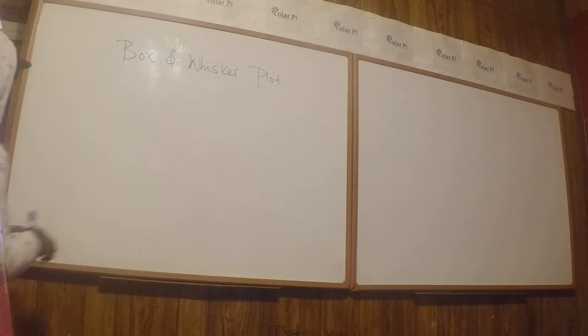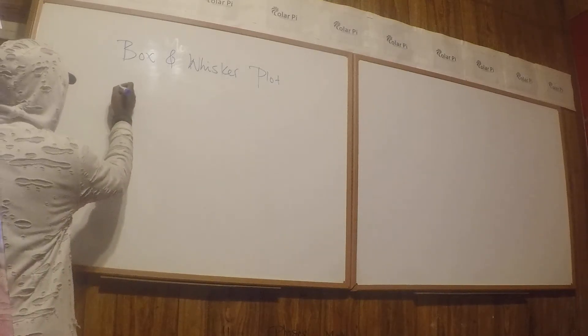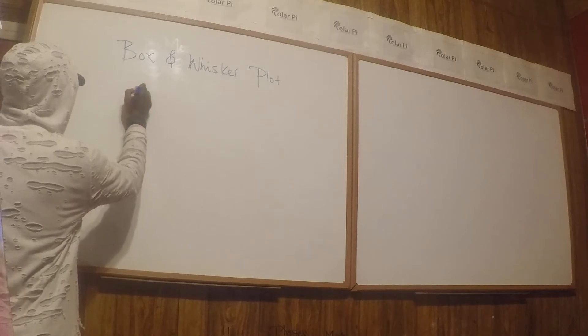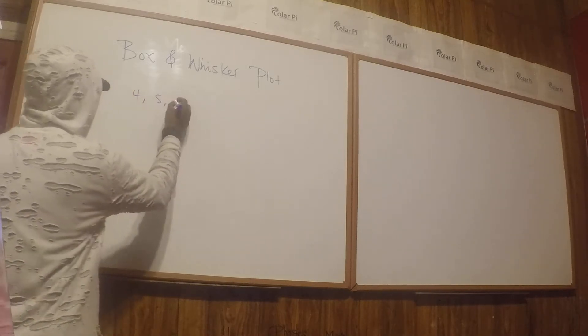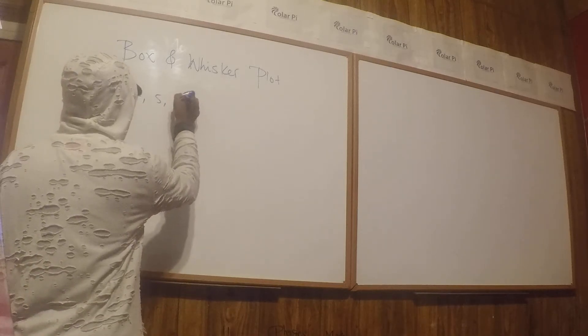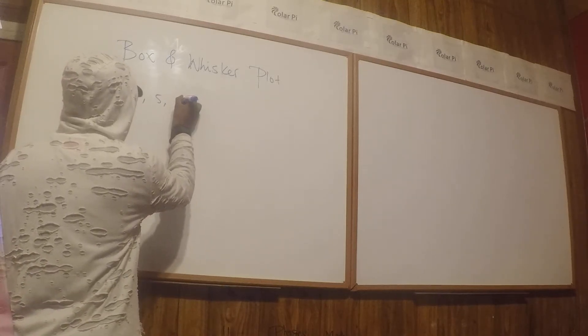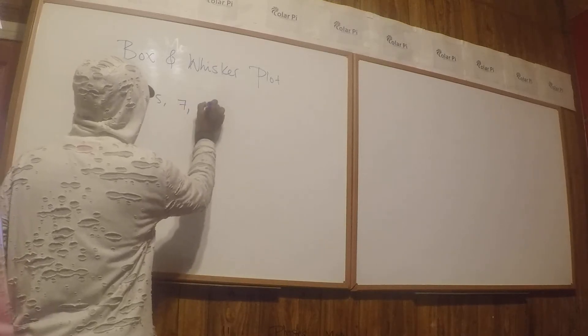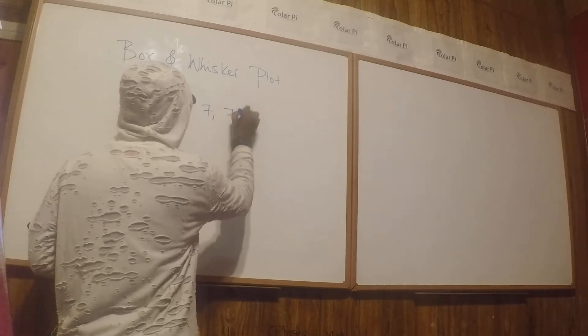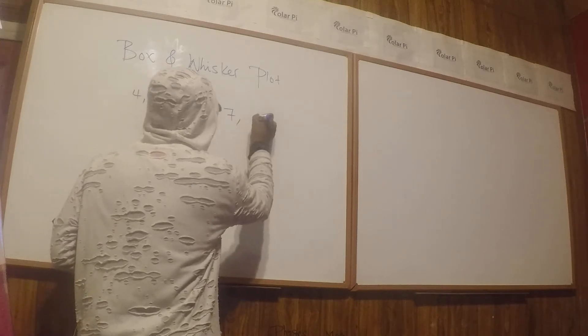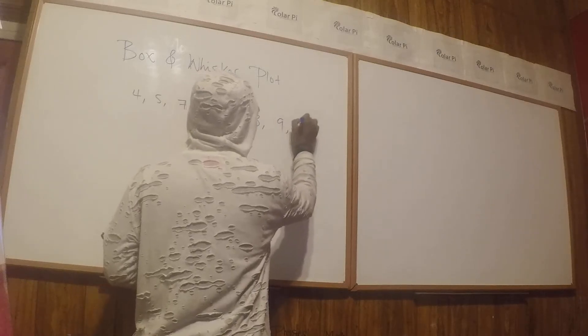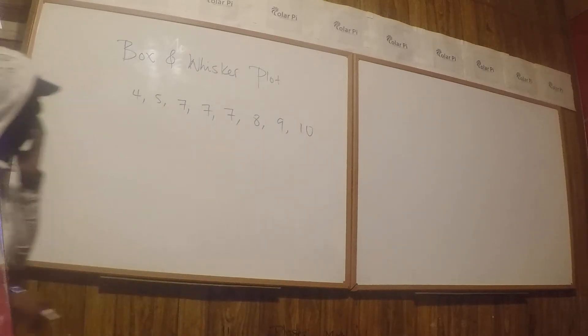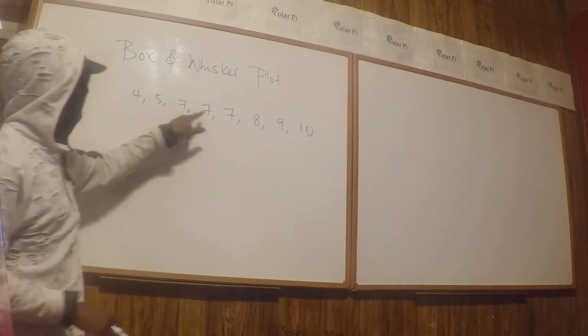Suppose that these are your scores on a math quiz out of 10. You have a 4 and then a 5 and then, what's after 5? Just kidding—7, and then 7 and 7 and 8 and then 9, 10. Let's see: 1, 2, 3, 4, 5, 6, 7, 8.